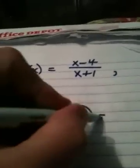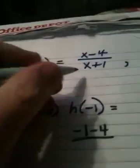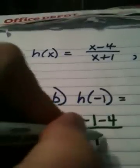Part B asks us to find h of negative 1. Okay, so on top, we would have negative 1 minus 4. On the bottom, we would have negative 1 plus 1. We're in trouble.